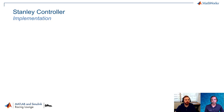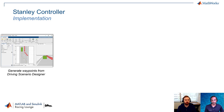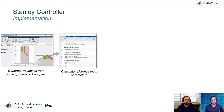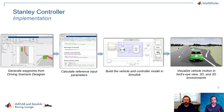Let's take a look at how this is actually implemented with our products. We're first going to start by generating the waypoints in Driving Scenario Designer. Then we'll move over into calculating some of the reference input parameters for our Simulink model using a MATLAB live script. Then we'll actually build the vehicle and the controller model in Simulink, and finally wrap up with visualizing all of this motion in bird's eye view, 2D plots, as well as the 3D environment using Unreal. Let's go to MATLAB and get started.